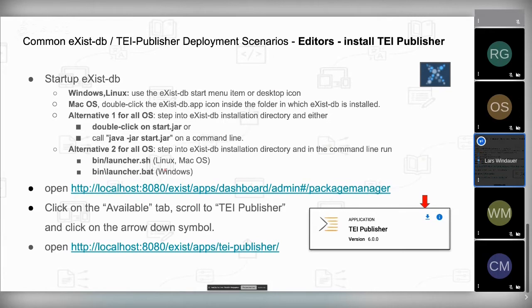Since we don't have Docker here, eXist-DB will run on its default ports: port 8080 for HTTP. You now have a bare eXist-DB, and to install TEI Publisher, go to the package manager, click on the Available tab, scroll down to TEI Publisher, and click the download arrow. It will install TEI Publisher version 6, and afterwards you can open it in your browser.